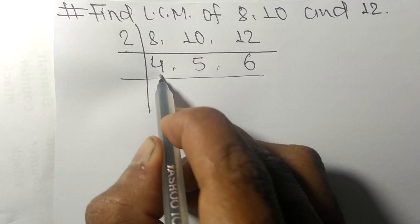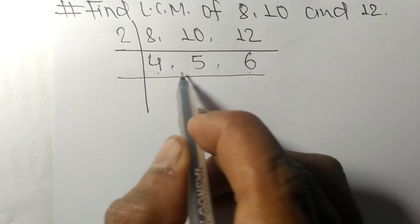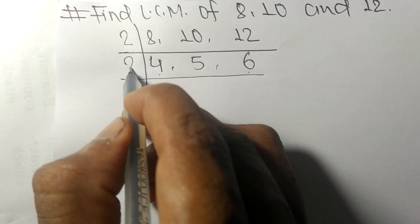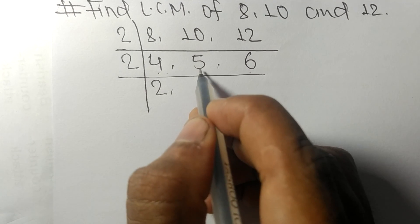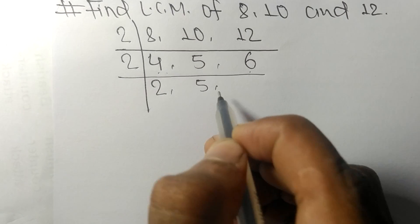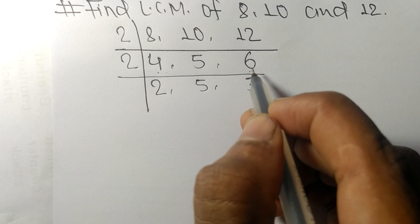Among them, 4 and 6 are exactly divisible by 2. 2 times 2 means 4, 5 not divisible so it is 5, 2 times 3 means 6.